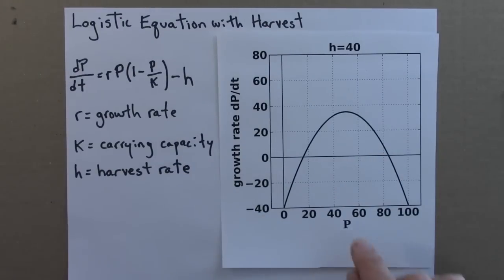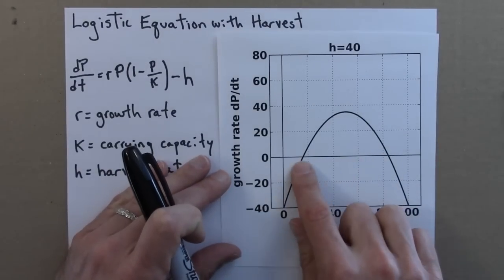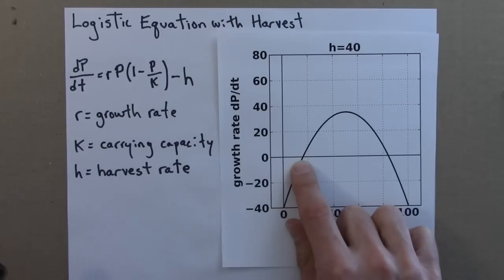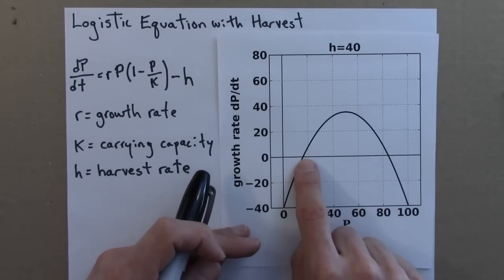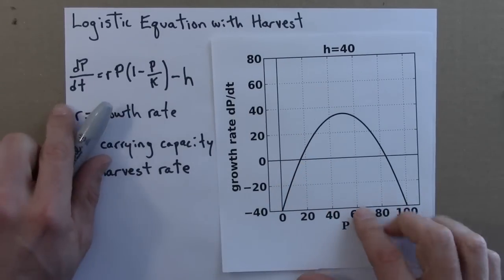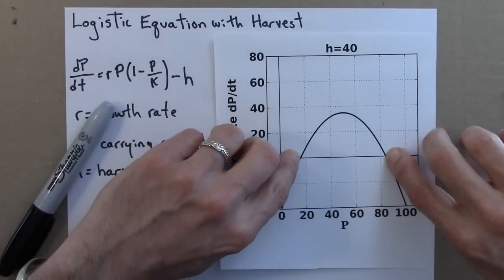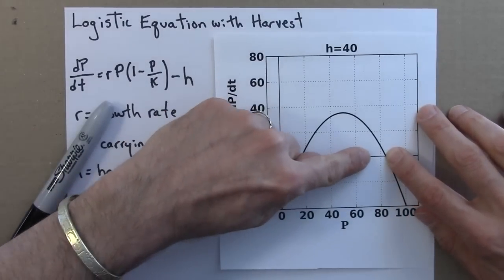What fixed points are there? What are their stability? So now we have positive growth if we're in between this number and this number. So in between here, the fish increase.